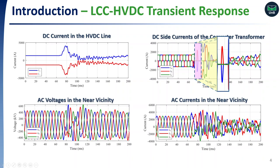These are the AC voltage and current in the near vicinity. It can be seen that the transient response of the LCC link leads to widely distorted AC waveforms, mainly during commutation failures. Therefore, an essential question arises: how do phasor-based protection relays perform in the case of distorted waveforms? In order to answer this question, we must revisit some essential concepts of the phasor estimation process implemented in commercially available relays.